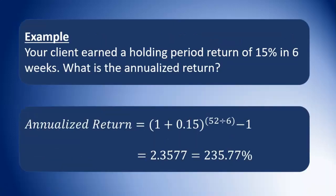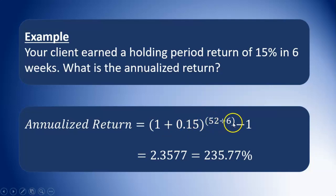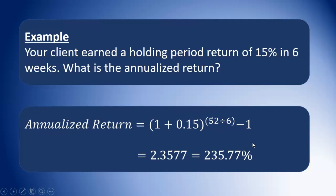So here we go. The annualized return is equal to 1 plus 0.15, raised to the power of 52 divided by 6 — it's always safe to use brackets to ensure we do the power correctly. Don't forget to subtract 1 from your answer. Our final answer is 2.3577, which multiplied by 100 is 235.77%, or roughly 236%.